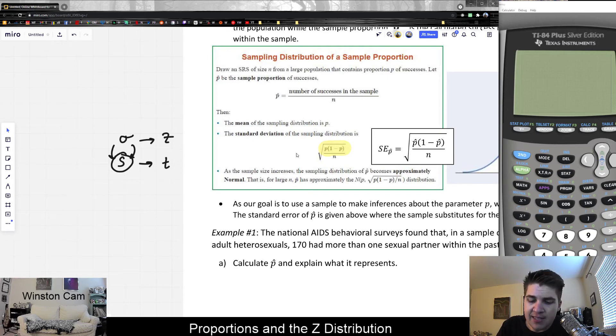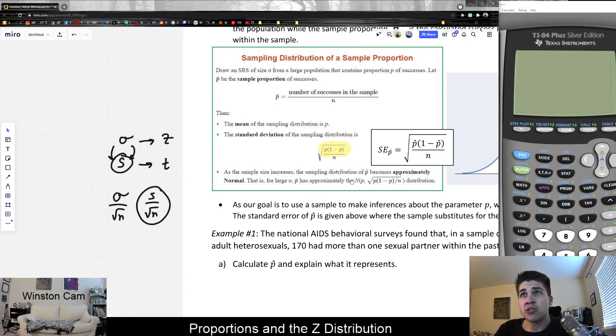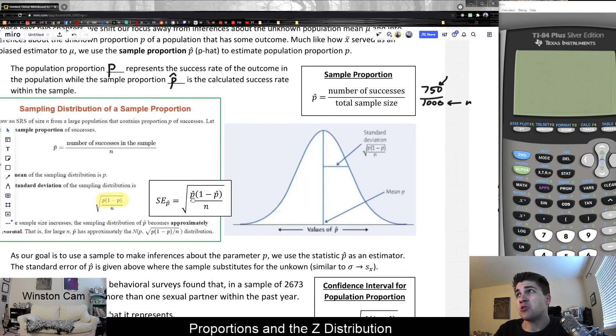Remember that we call the standard error the standard deviation of a sampling distribution. But the standard deviation, when we're dealing with T distributions, we called the standard error. The same terminology is used when we don't know the original proportion.